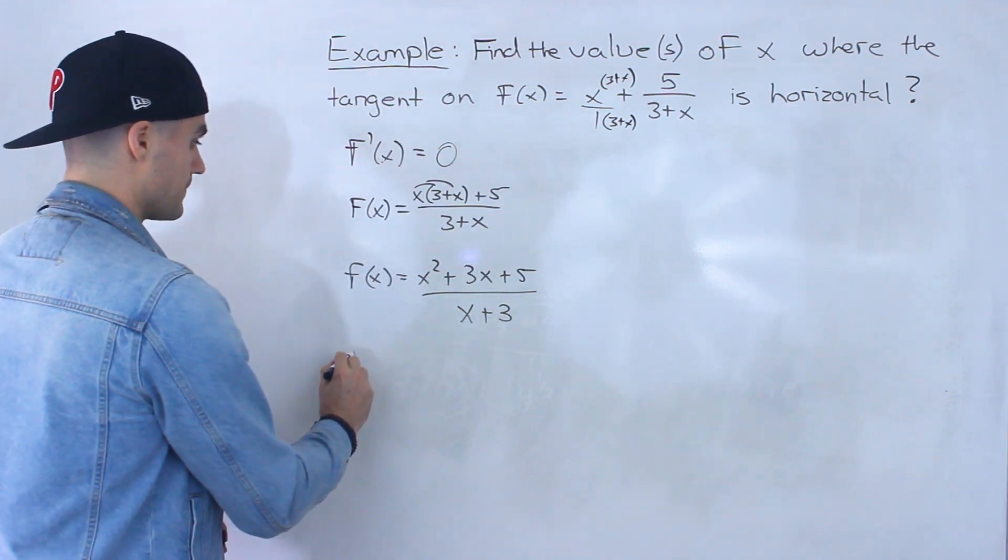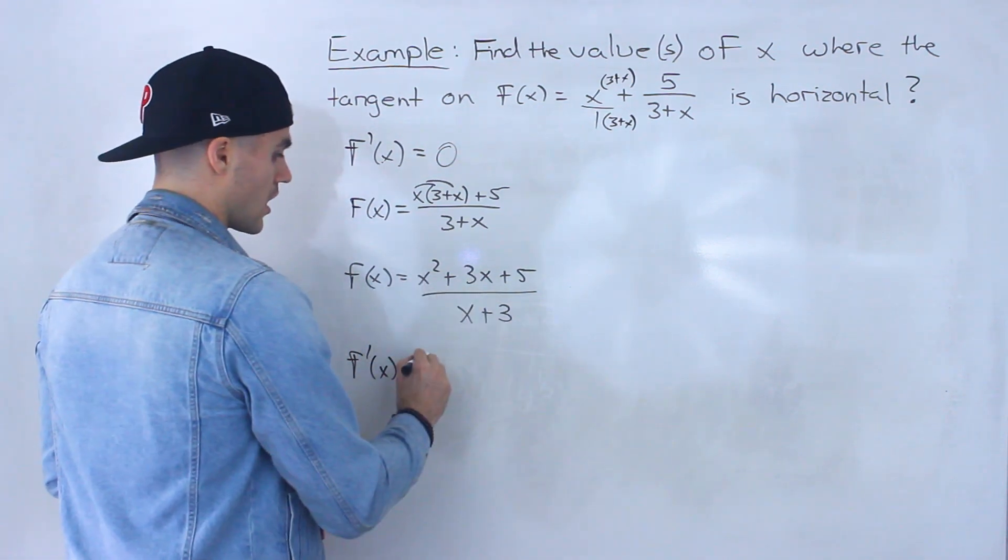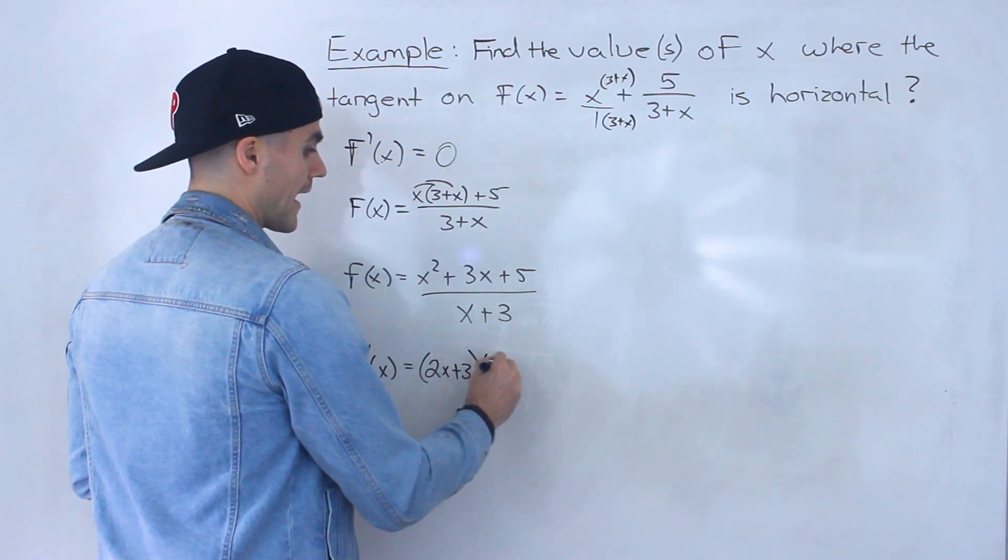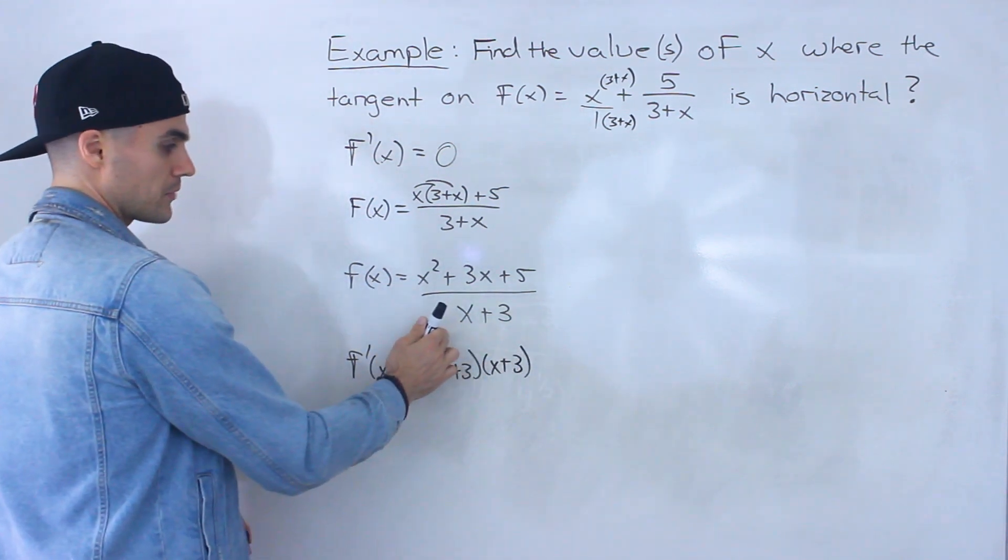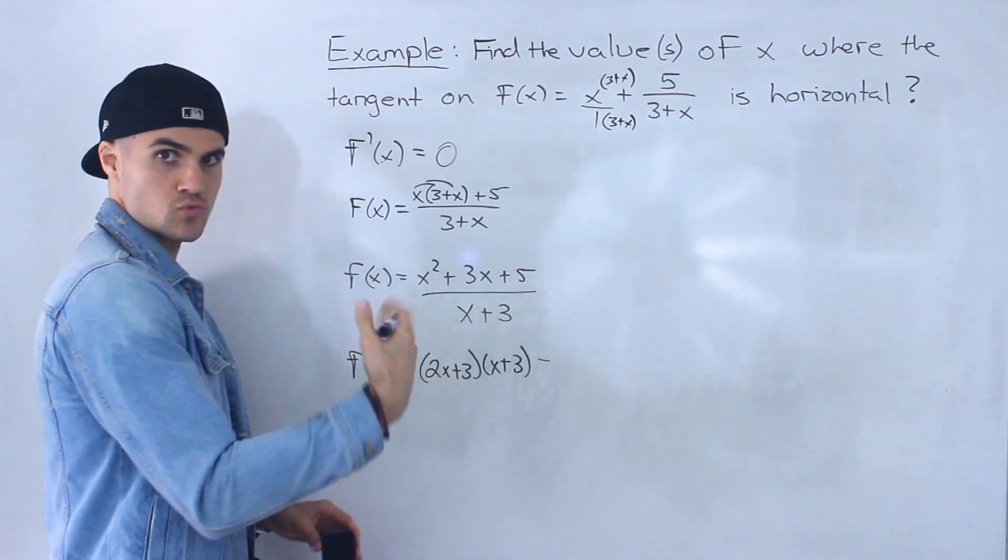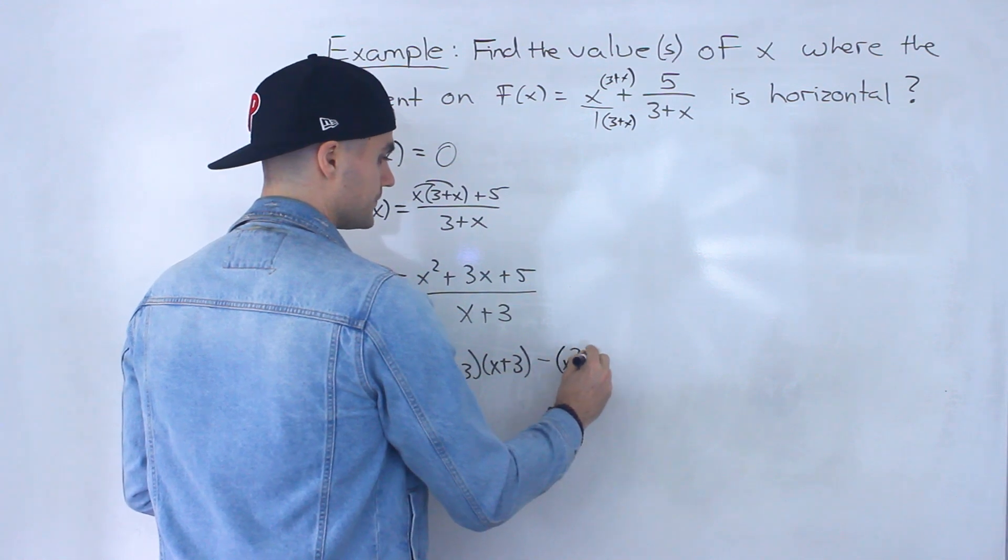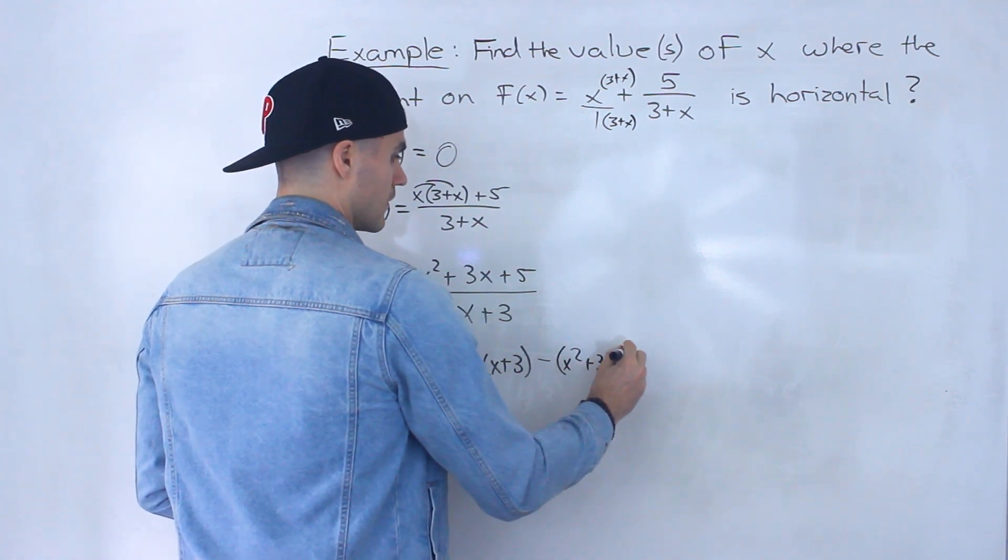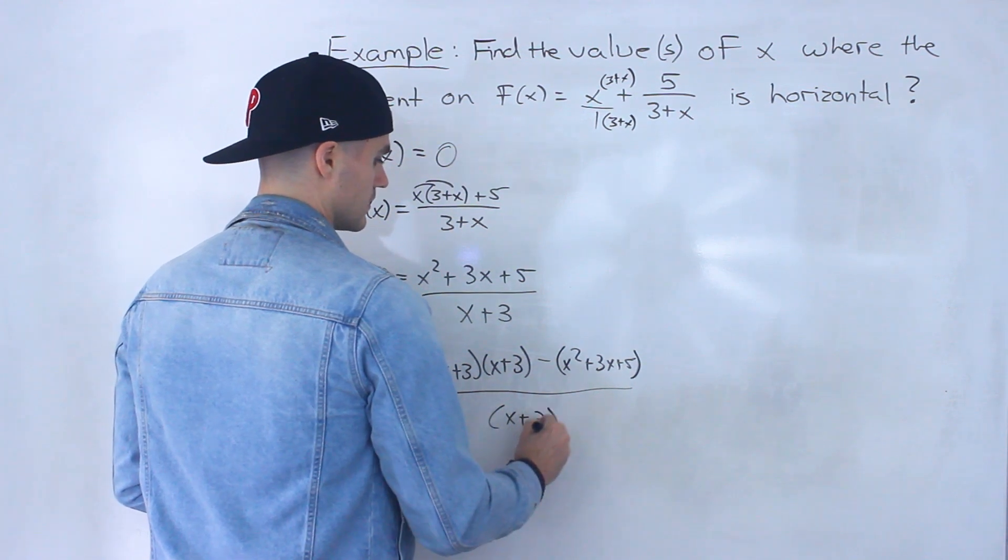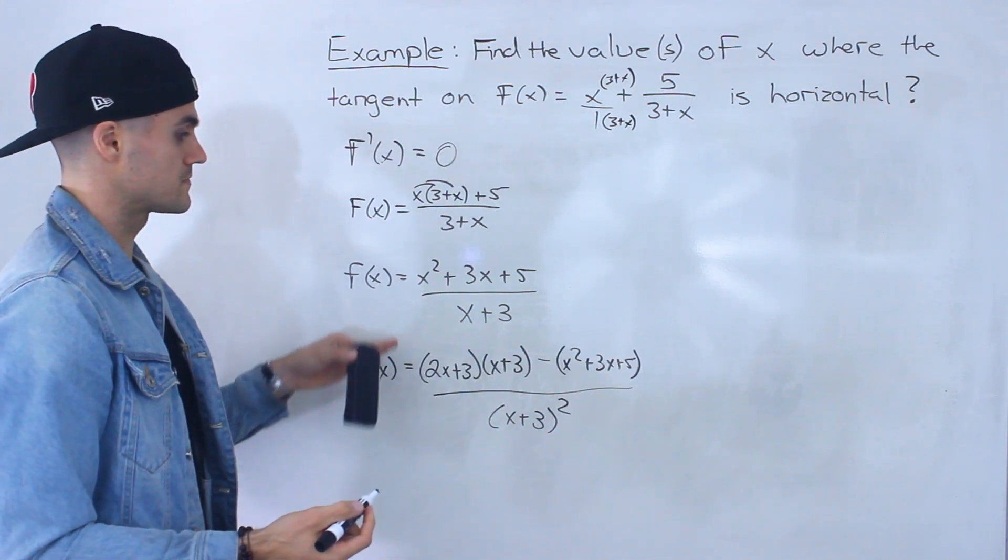So to do that, what we would do is take the derivative of the top, which would be (2x + 3), multiplied by (x + 3), multiplied by the bottom, minus the derivative of the bottom, which is 1, times the top, all over (x + 3)². So I just applied the quotient rule on this.